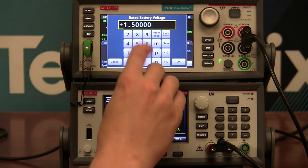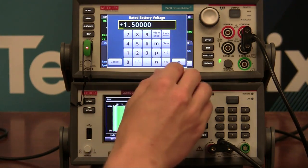So now, you have to set your rated battery voltage. Since it's a AA model, it's 1.5 volts.